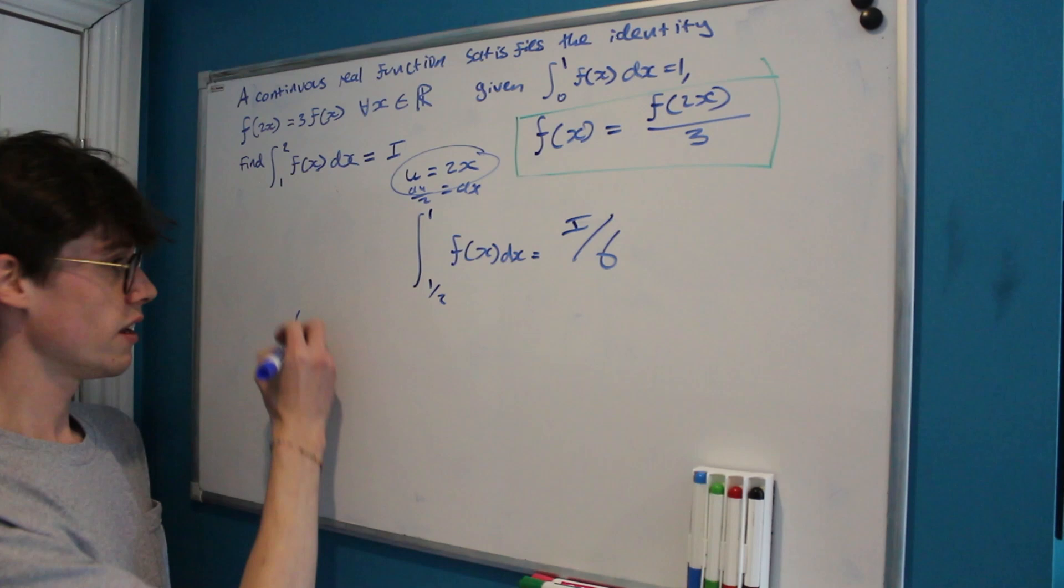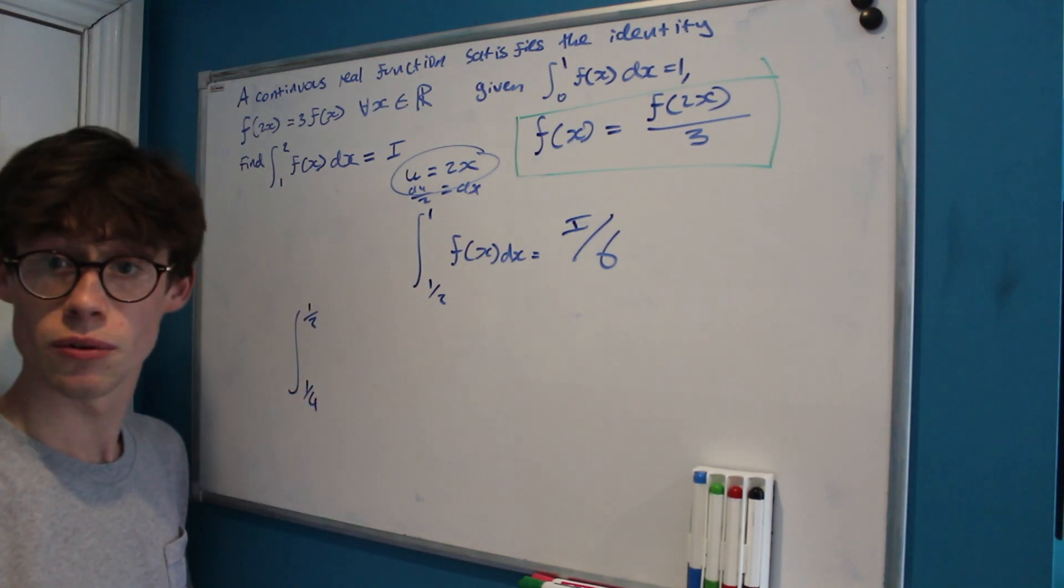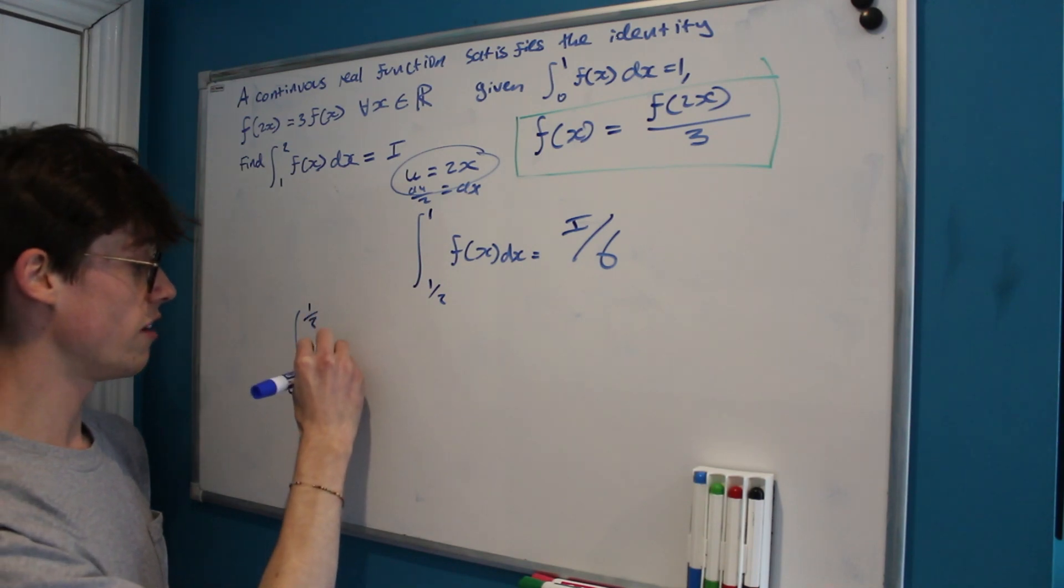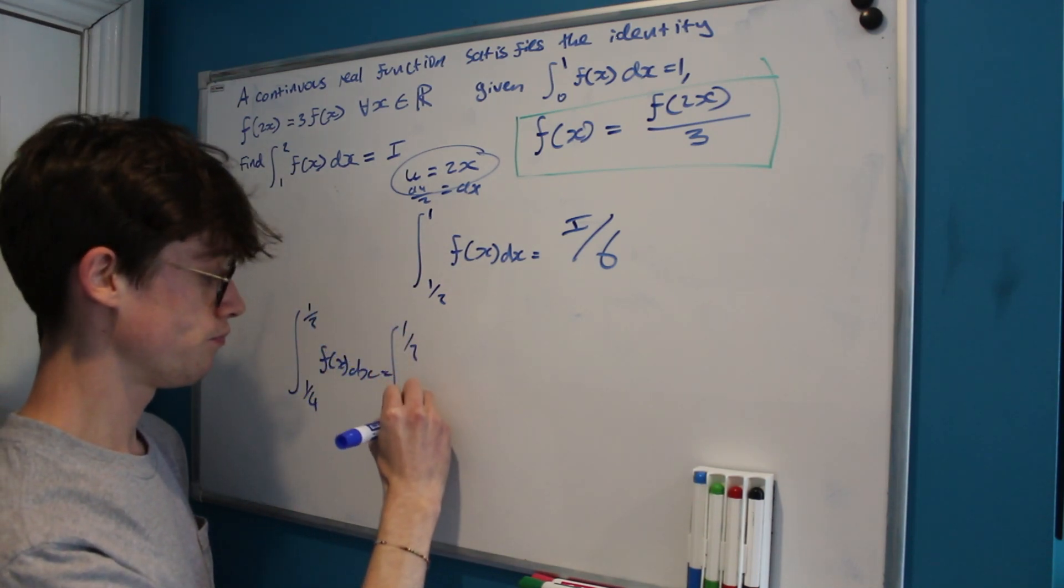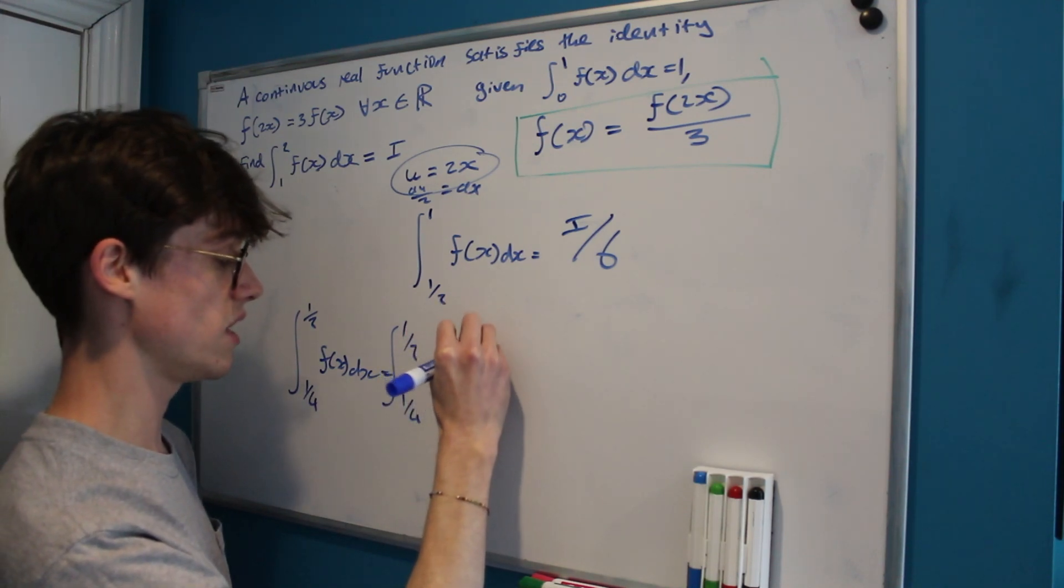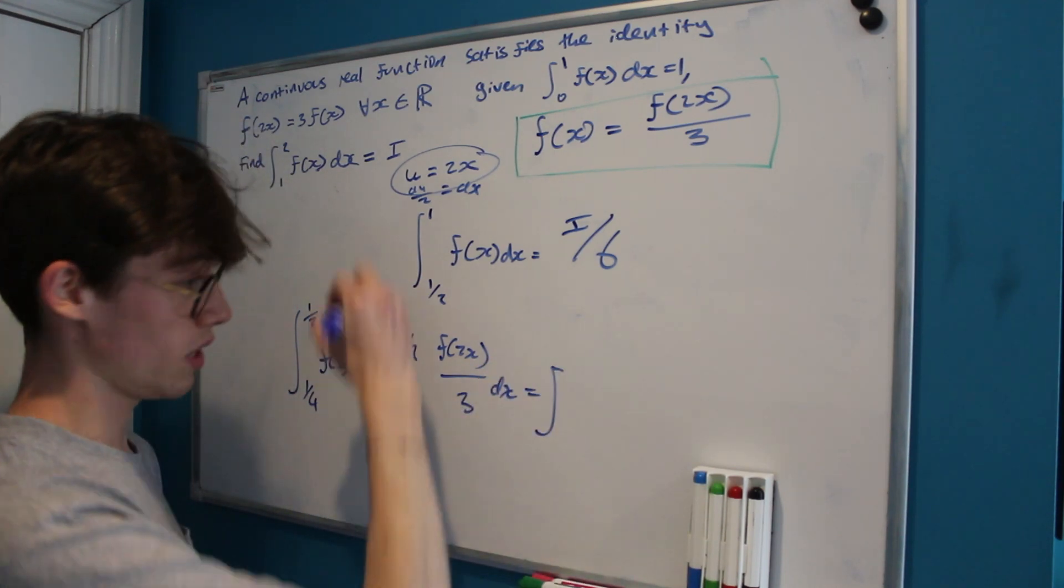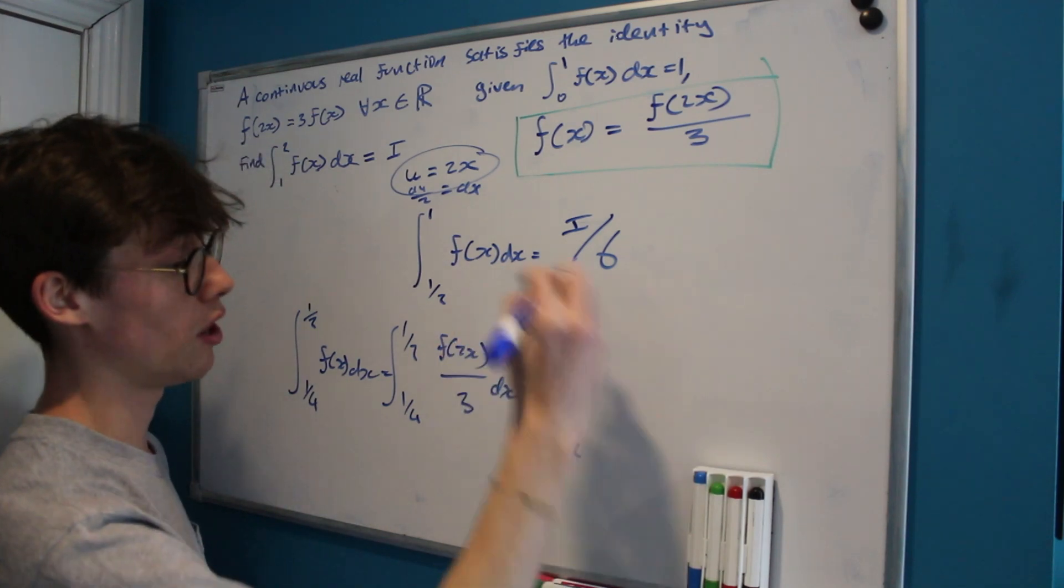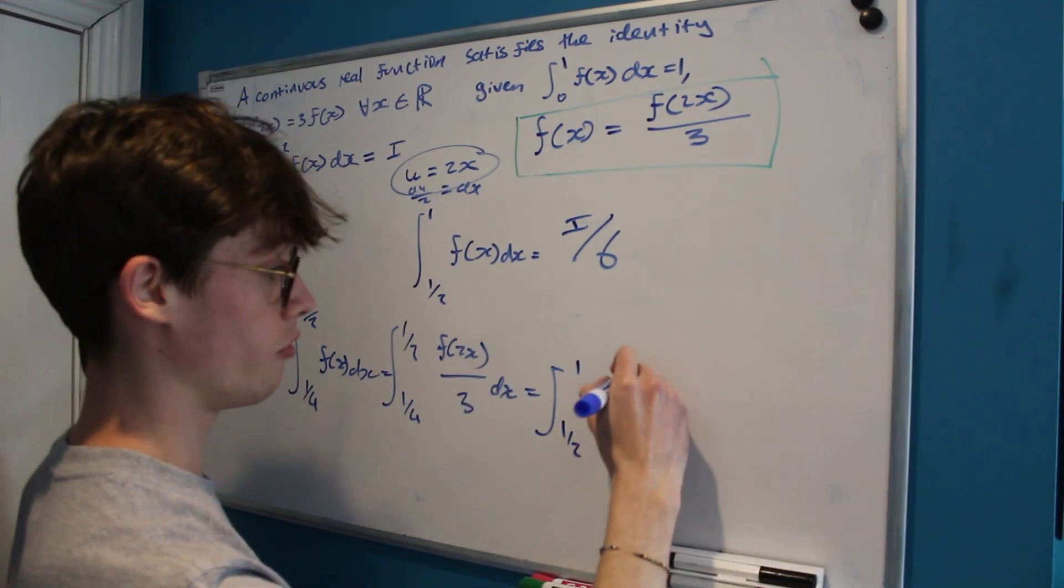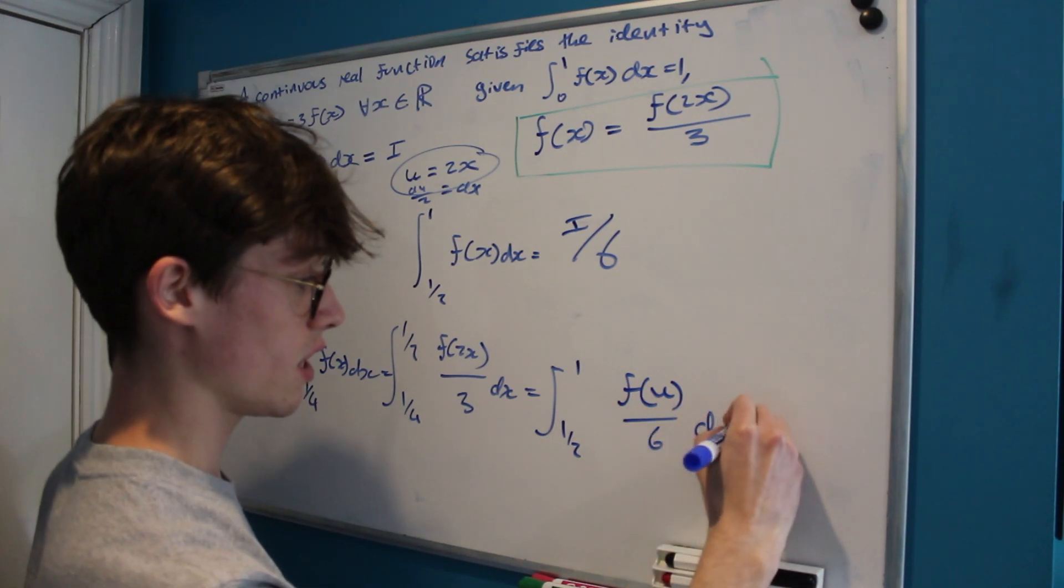So we're going to look at the integral from a quarter to a half now. So we've halved again of f(x) dx and it's going to follow a similar format to what we just did. That's equal to f(2x) over 3 dx, which is equal to, now doubling our bounds by making that substitution, the integral from a half to 1 of f(u) over 6 du.